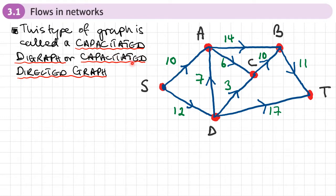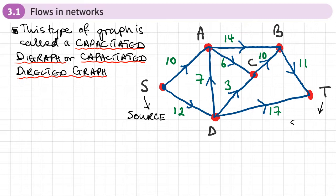Capacitated means that each arc has a capacity. You could imagine this, for example, as water pipes all connected together, where we have the source of the water here — we normally use S. This is called the source. The one at the end we usually use letter T. This is called the sink. So everything comes out of the source like a tap and ends up in a sink.